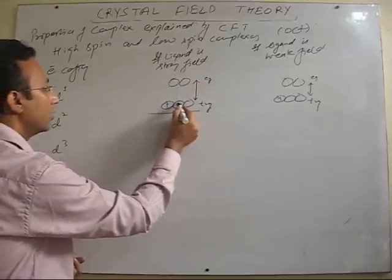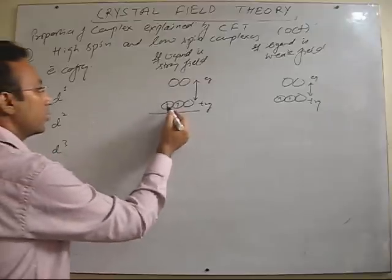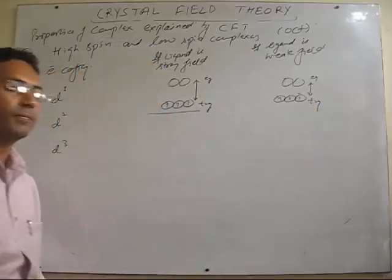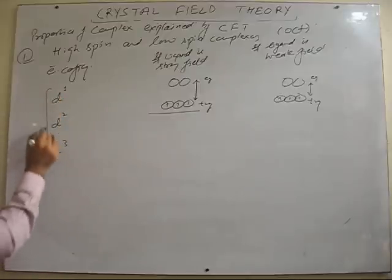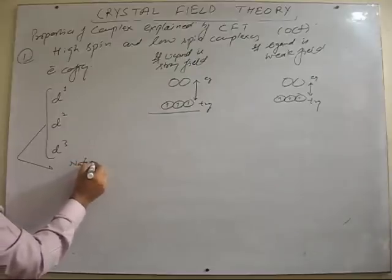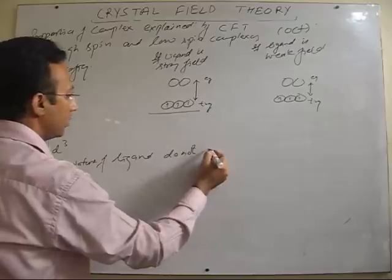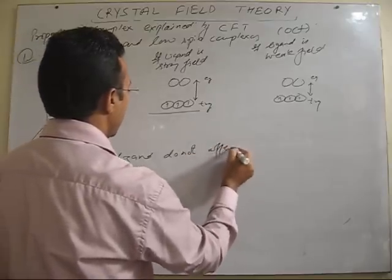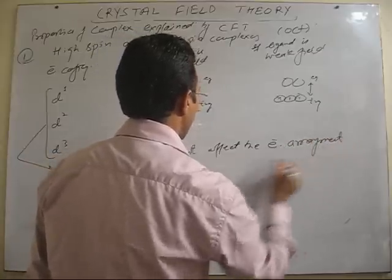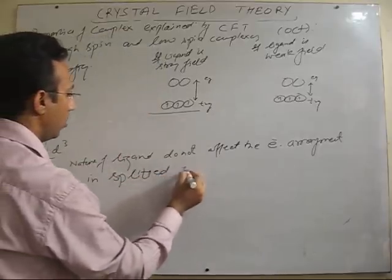For D2 also, 1, 2. Here also, 1, 2. Similarly, for D3, arrangement will be 1, 2, 3, we know, single field, 1, 2, and 3. So, in these three cases, for the same matter, nature of ligand do not affect the electronic arrangement in splitted orbitals.